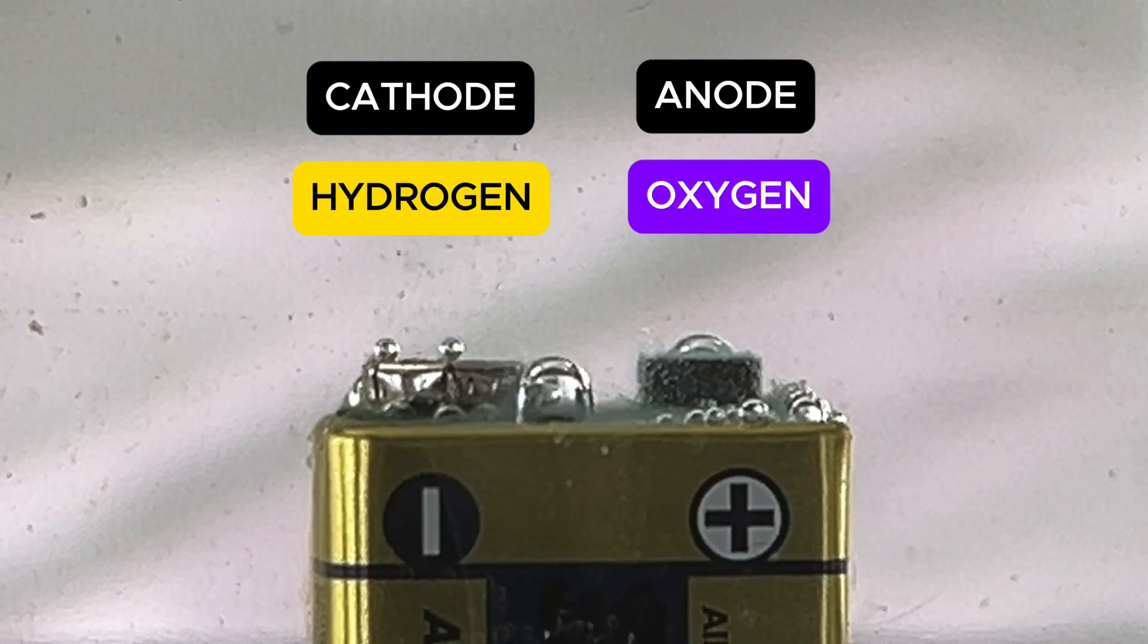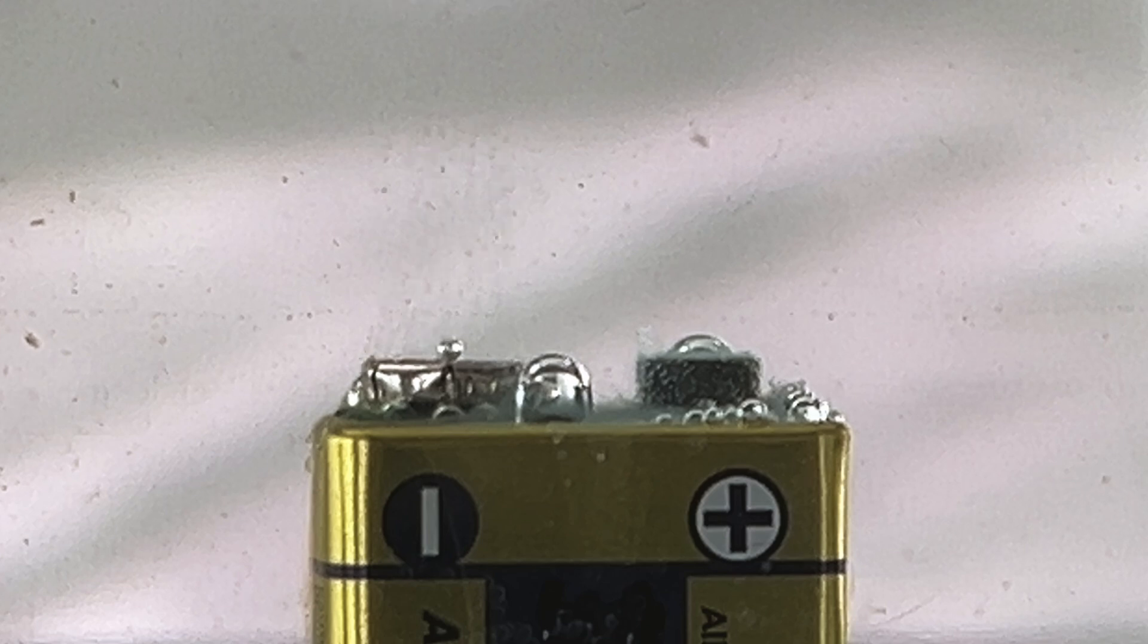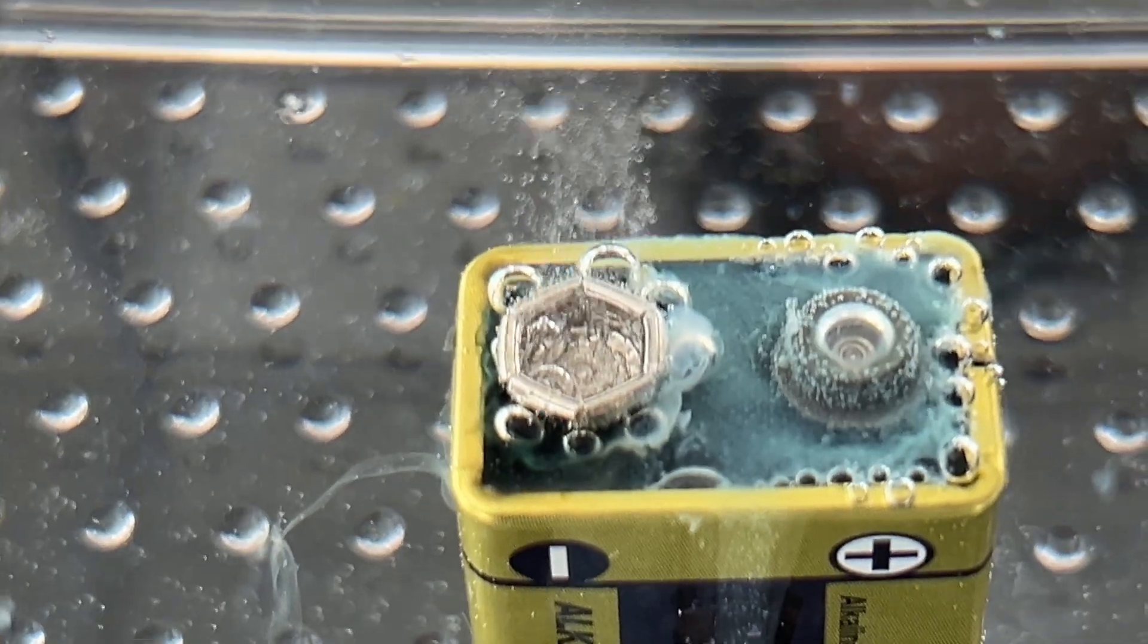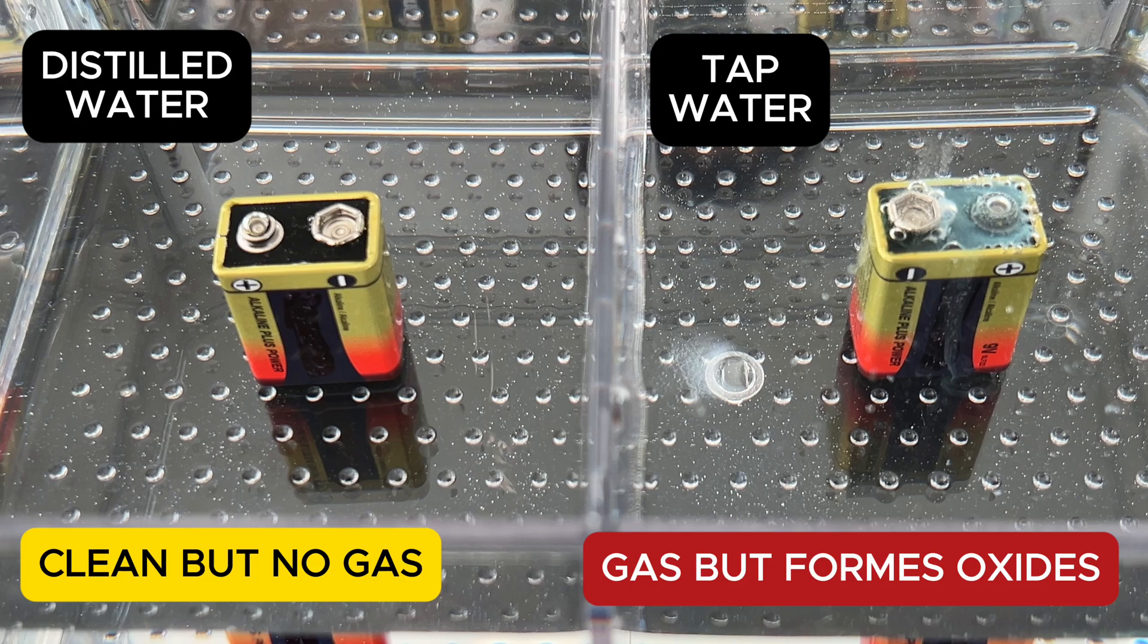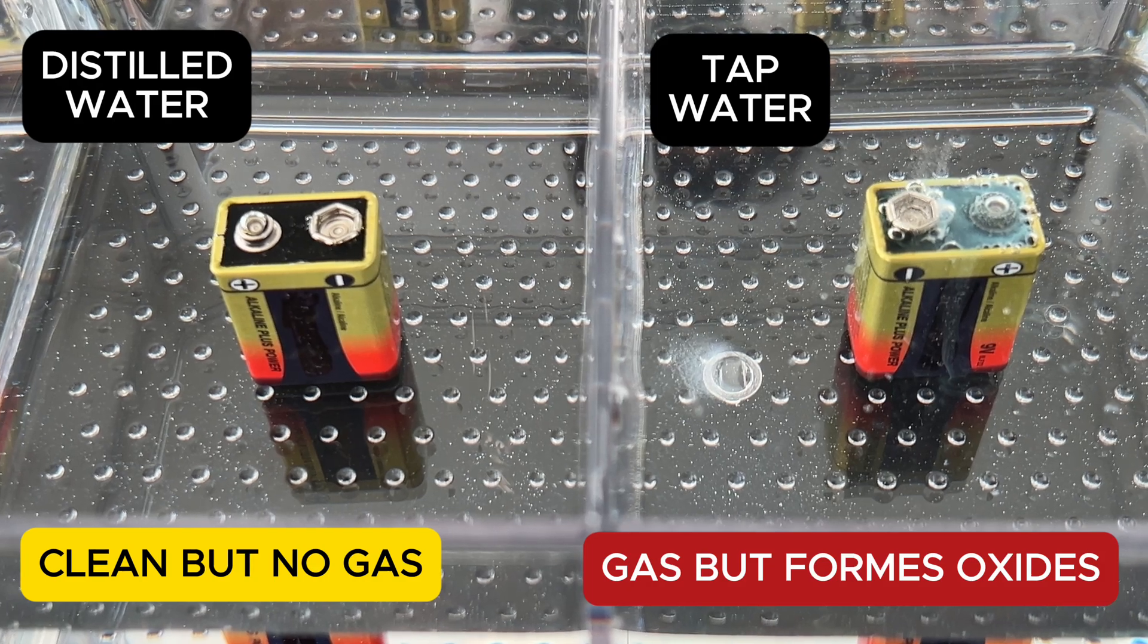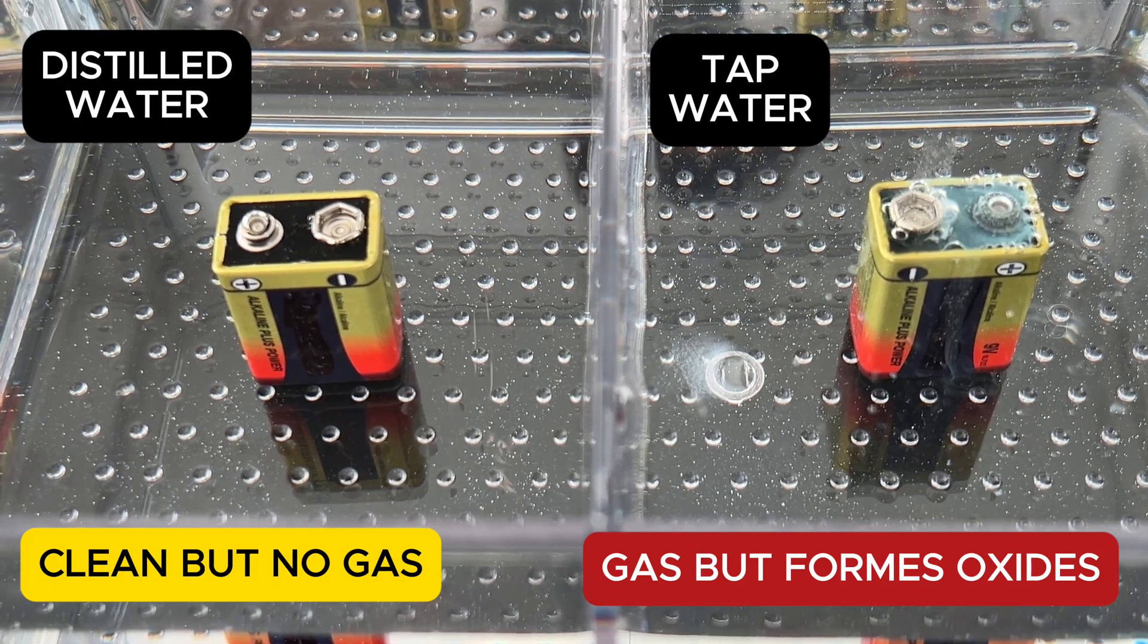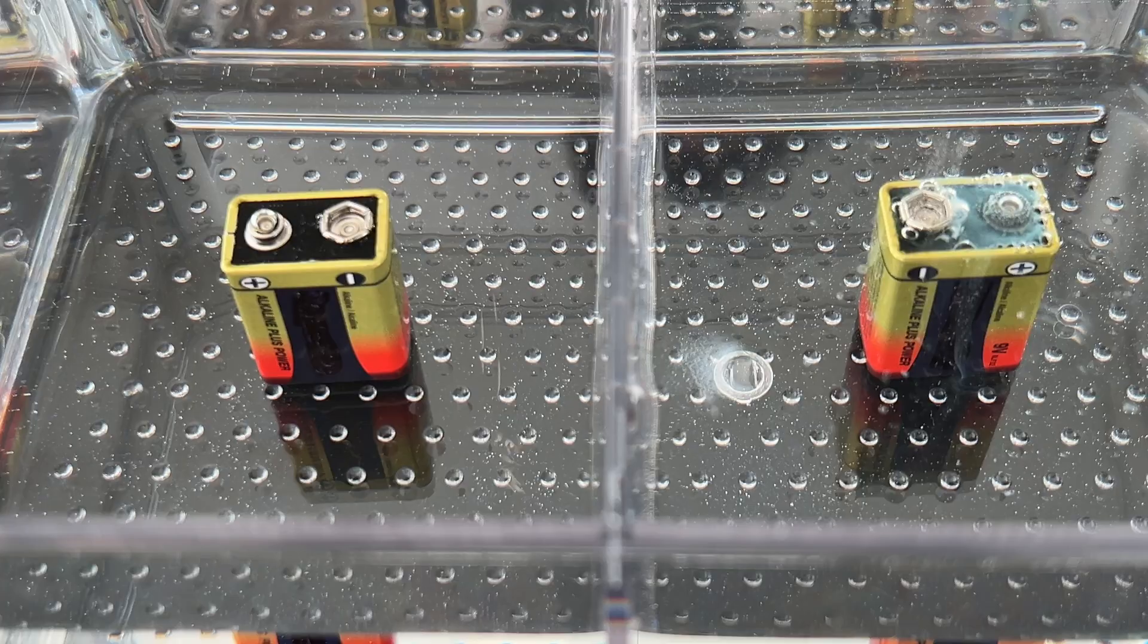Watch closely as bubbles immediately form at the cathode. These are hydrogen molecules. You'll also notice significant activity at the positive electrode or anode. The water is now undergoing electrolysis, separating into its fundamental components, hydrogen and oxygen.